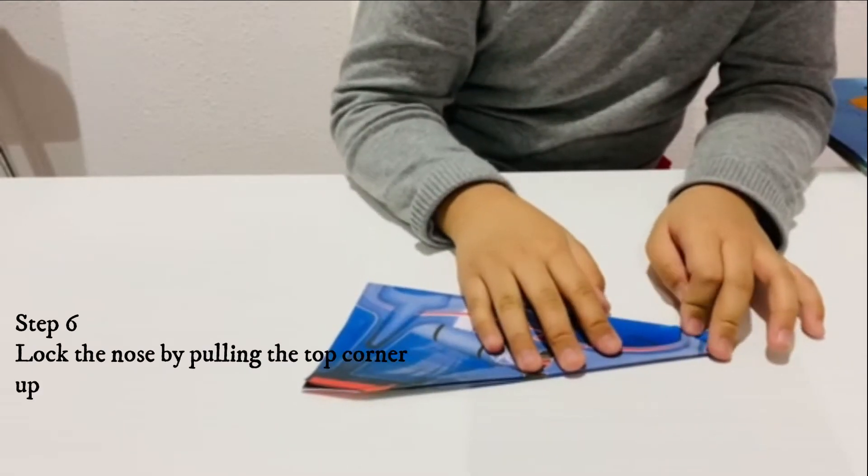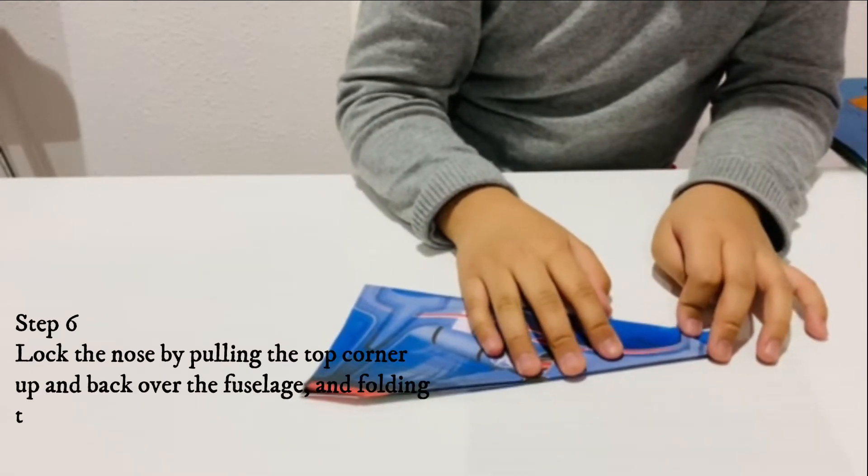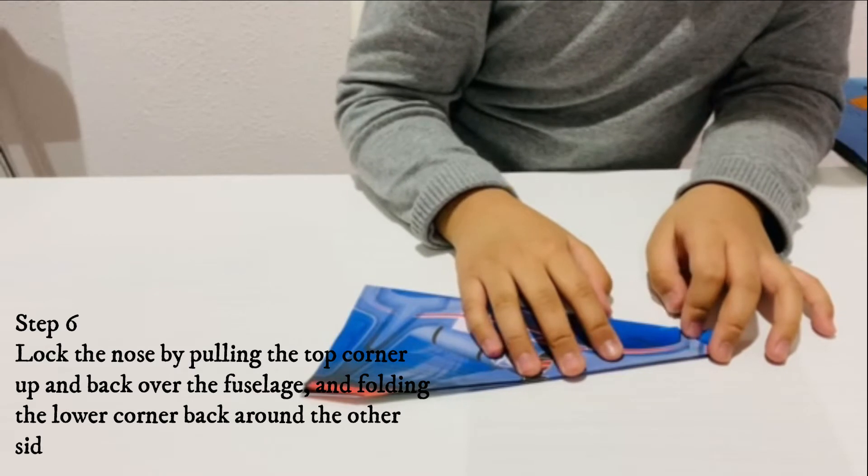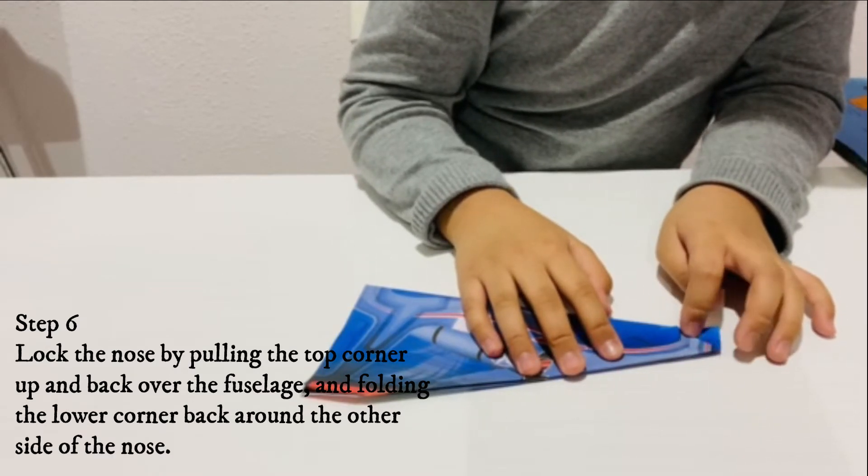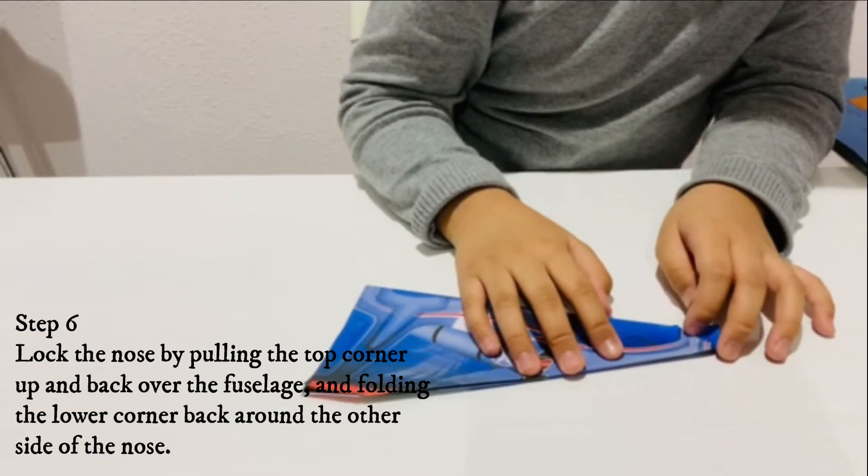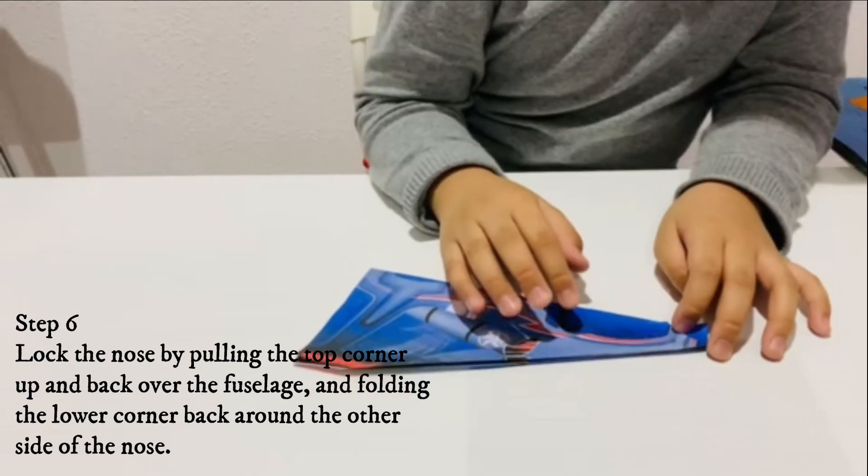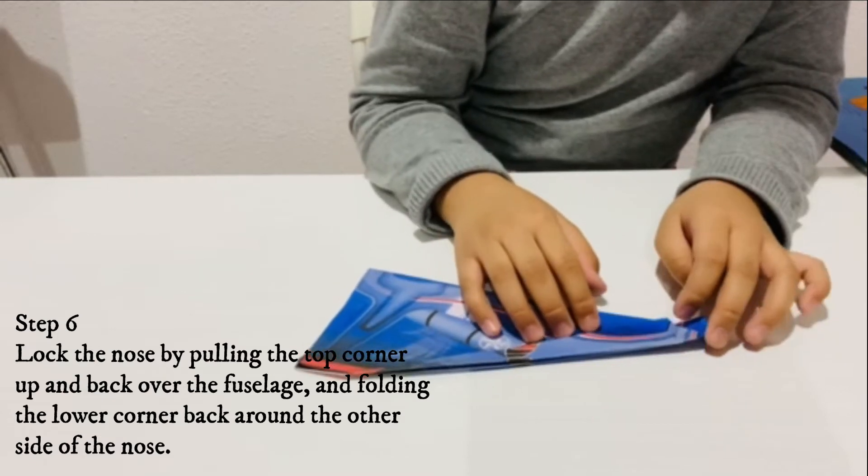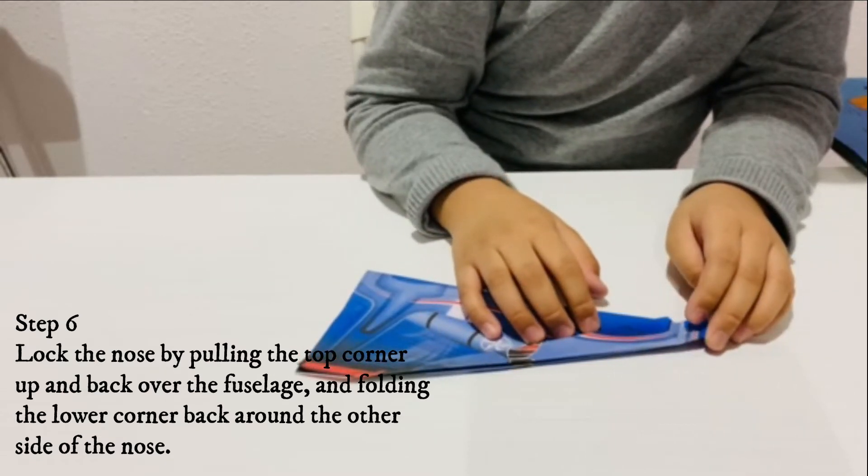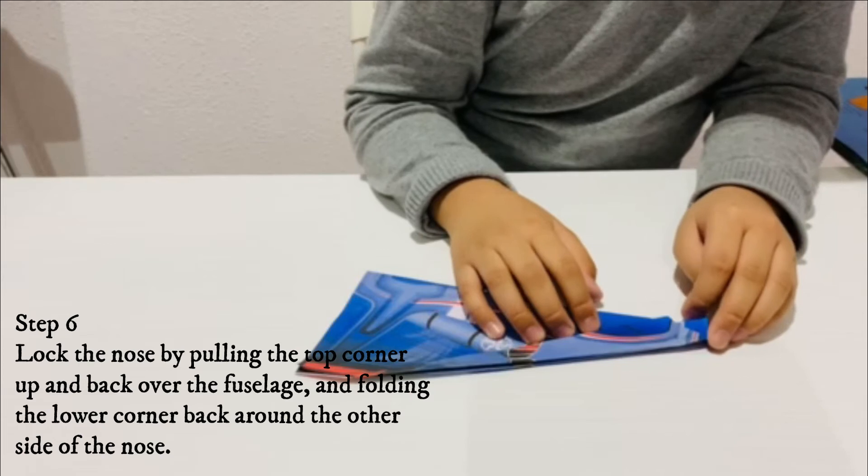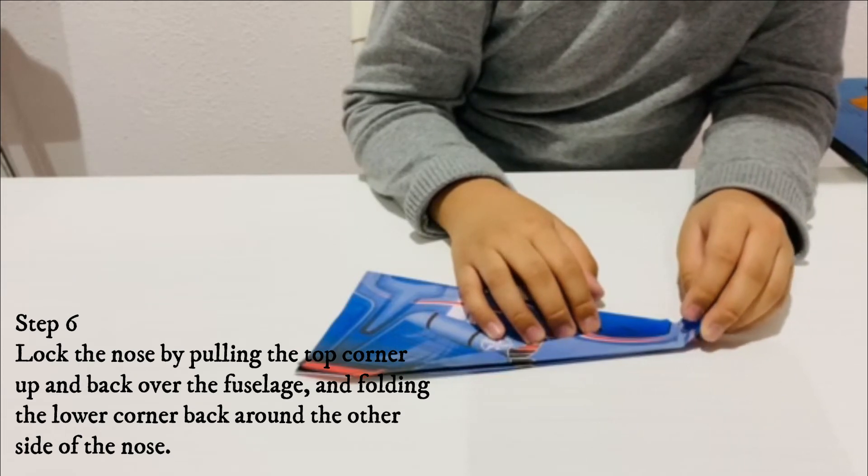Step 6: Lock the nose by pulling the top corner up and back over the fuselage and folding the lower corner back around the corner side of the nose.